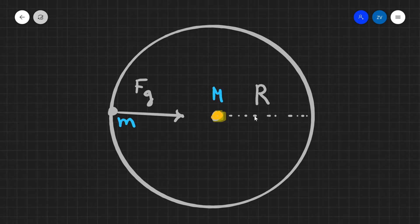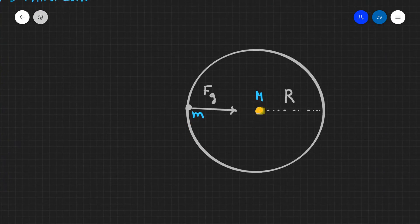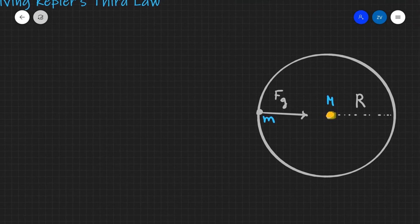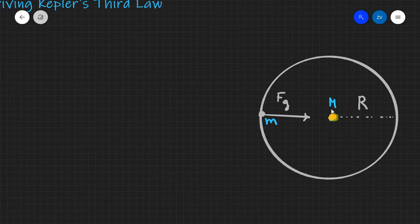The radius of the orbit or the average radius of this orbit is given by r. Now just before we get started we're going to assume that the planet is moving in a circle around the star.